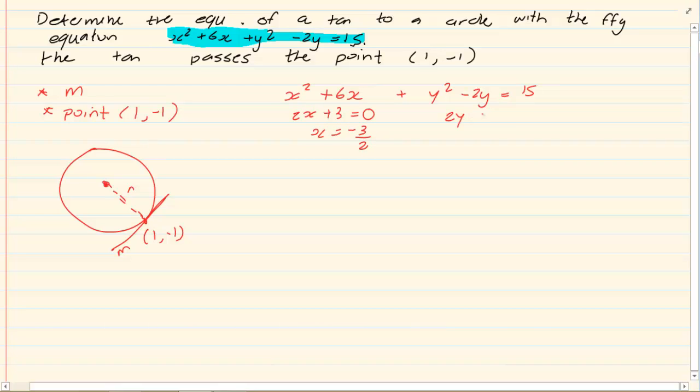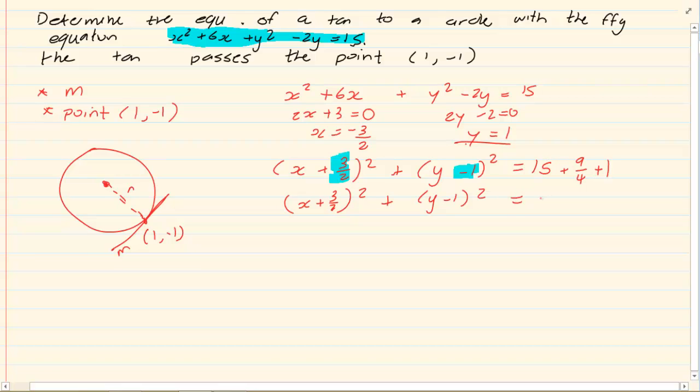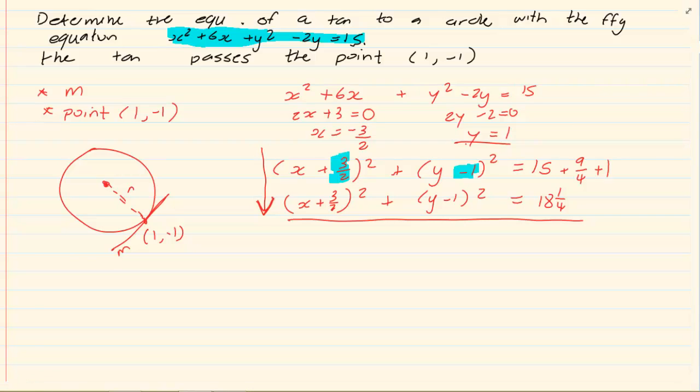Our center would be X plus 3 over 2 all squared plus Y minus 1 all squared is equal to 15. And then you need to add the extras, which means in this case, I'm adding plus 9 over 4 and I'm adding plus 1. To get the equation, we didn't need to do this. But usually they would tell you, get the equation of the circle in this form. But had they not asked this, we only needed the center, which was minus 3 over 2 and 1. So you could have stopped at this level.